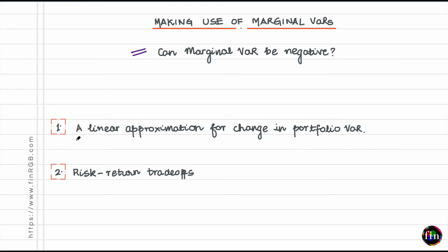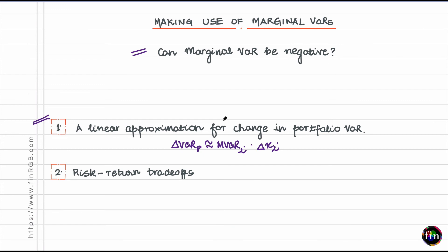In terms of how to use marginal VAR: first, I can use it as a means of linearly approximating how much my overall portfolio VAR changes when the allocation to any given sub-portfolio changes by a tiny amount. The change in portfolio VAR ≈ marginal VAR_i × ΔX_i. This is a linear approximation — like walking along the tangent in the diagram.